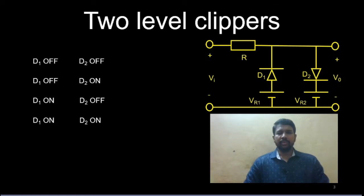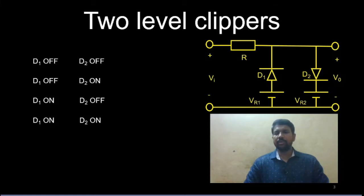Once you determine which state the diodes are in, it is easy to find the output. For example, if D1 and D2 are both in the off state, we replace D1 and D2 each with an open circuit. No current flows through R, so the drop across R is zero, meaning the output voltage equals the input voltage.